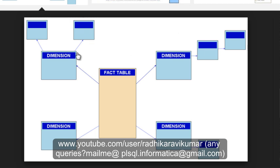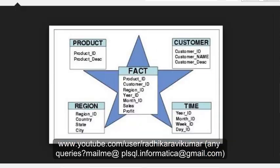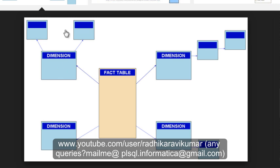Snowflake schema — I've got this picture here and you can see it looks very different. But if you neglect these empty boxes, you can see we are left with star schema. So snowflake schema is nothing but an extension of star schema — that is the simple definition. If you neglect the extra boxes, you're left with just the fact table and dimension tables, similar to star schema.